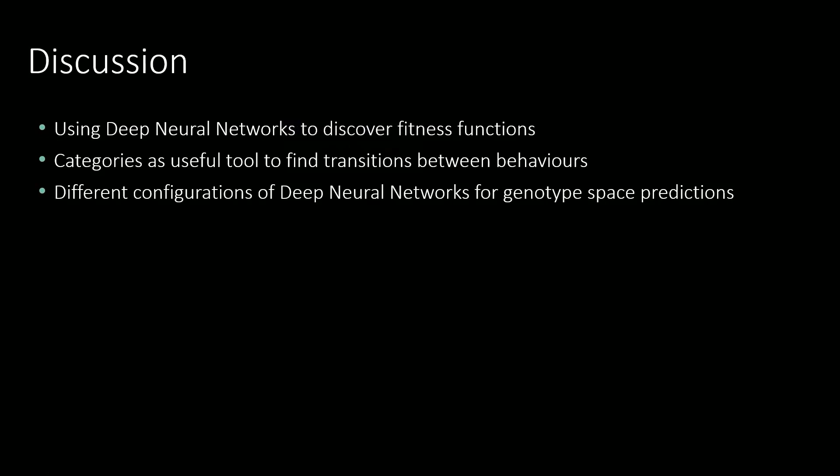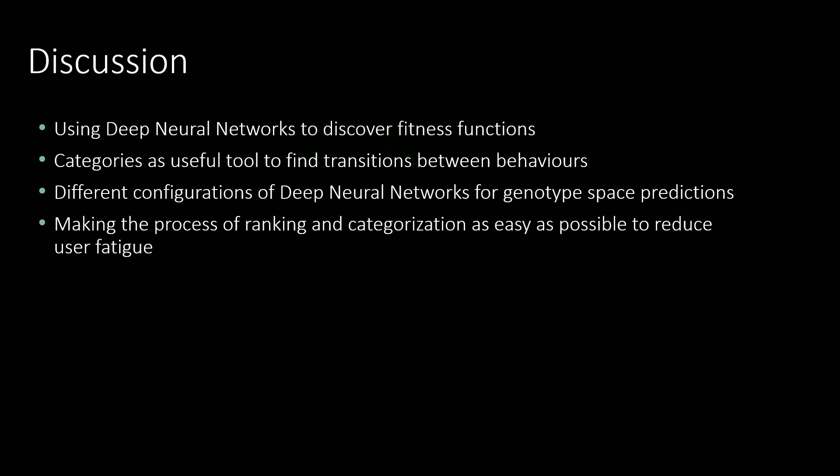There is a lot of scope for trying out different configurations of deep neural networks for genotype space predictions. The choice of a network with two fully connected hidden layers of 200 and 100 neurons was simply based on the default values in the FastAI tabular model documentation, and a hyperparameter search would likely reveal even better results. We also stress how important it is to make the process of ranking and categorising data as easy as possible for creative practitioners to reduce user fatigue, allowing them to suggest new categories with as few training examples as necessary.